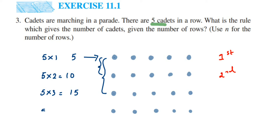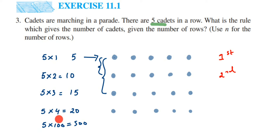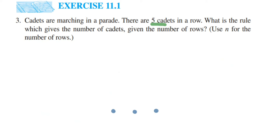Suppose there are four rows — it will be five into four, which equals twenty. Suppose there are one hundred rows — it will be five into one hundred, which is five hundred cadets. So the row count is changing while five is fixed, being the number of cadets in each row. This changing number — one, two, three, four — represents how many rows are present. Since this number is changing, it becomes a variable n. So the pattern is simply 5n. For example, up to the sixth row: five into six equals thirty cadets. n is the number of rows.